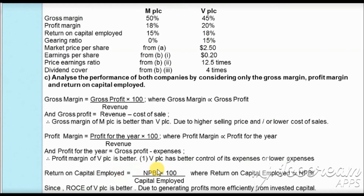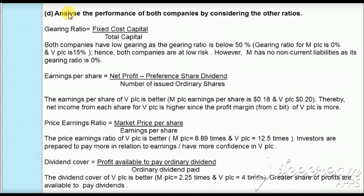Return on capital employed is calculated by taking net profit before interest times 100 divided by capital employed. ROCE is directly proportional to net profit. Since profit for the year is higher for VPLC, ROCE is also higher for VPLC at 18% versus 15%, showing VPLC uses its capital more efficiently. Thus, even though MPLC has a higher gross margin, high expenses prevent it from achieving higher profit and higher ROCE.